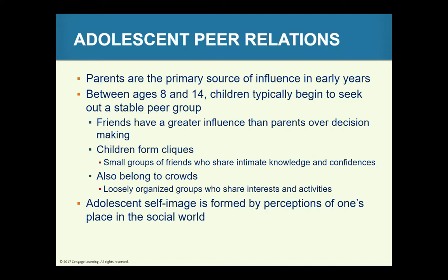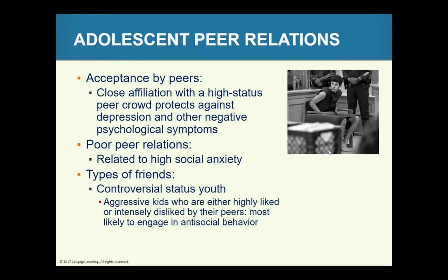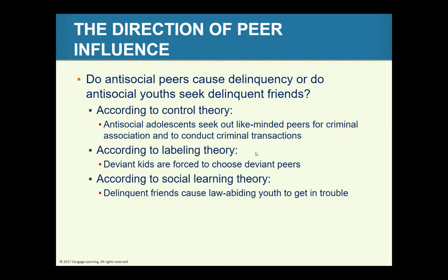There are cliques and crowds that peers come into contact with throughout their life course. When we talk about peers and delinquency, we're talking about peer group relationships that can be closely tied to delinquent behavior. There's a term of co-offending, which refers to delinquent acts committed in small groups. There are theories that examine the direction of peer influence: social control theory, labeling theory, social learning theory, routine activities theory, and rational choice theory.